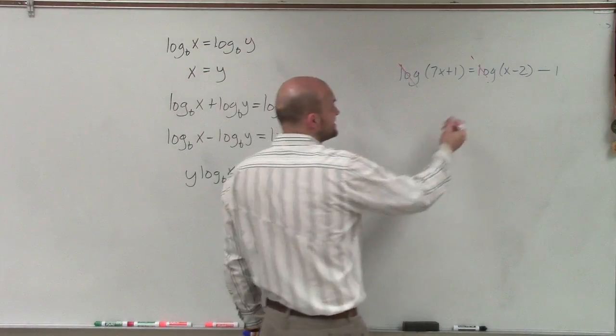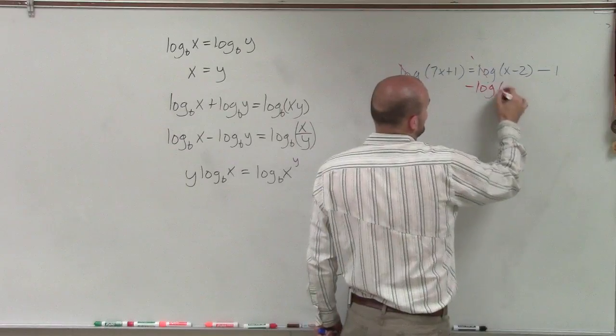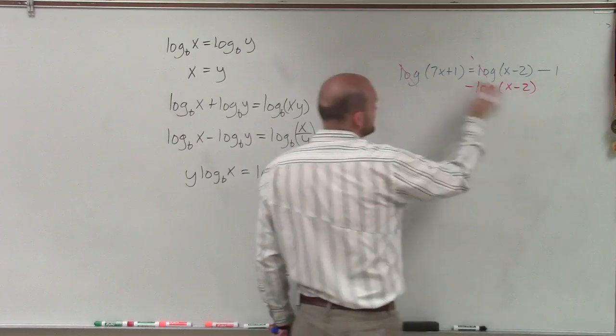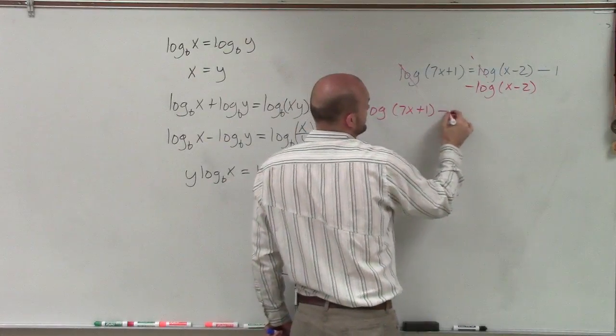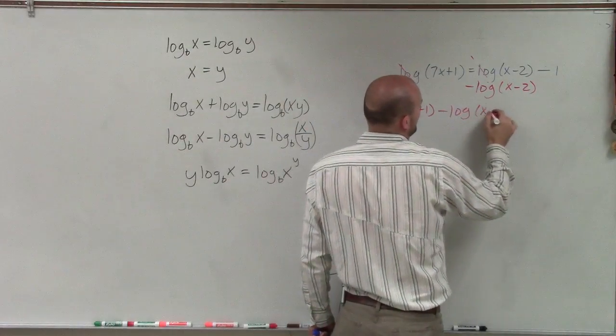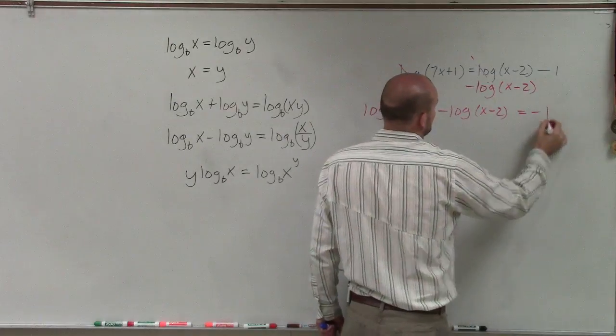So what I'm going to have to do is get these logarithms on the same side. So I'm going to subtract my log on the other side. So now I have log of 7x plus 1 minus log of x minus 2 equals a negative 1.